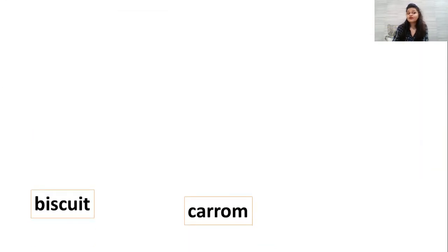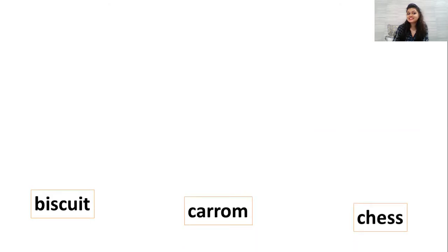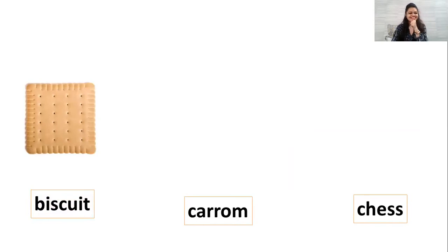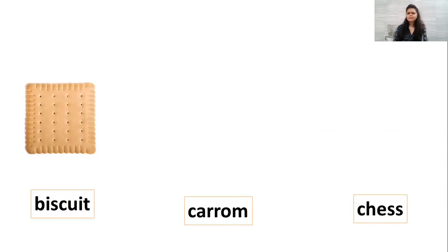A favourite thing — that is biscuit. Biscuit is also in square shape. Yes, that's right children, that is also in square shape.